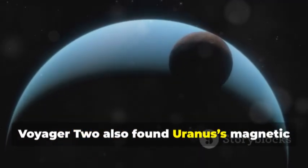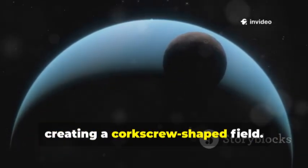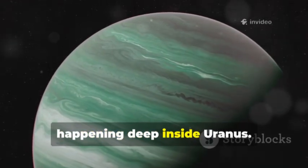Voyager 2 also found Uranus's magnetic field was wildly tilted and off-center, creating a corkscrew-shaped field. This suggested something strange was happening deep inside Uranus.